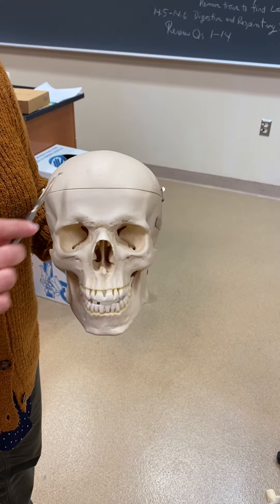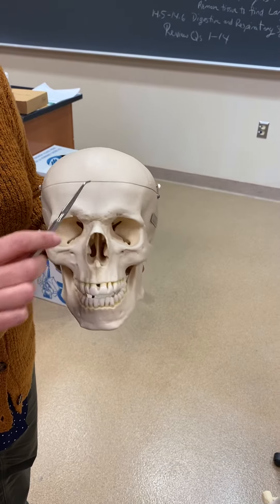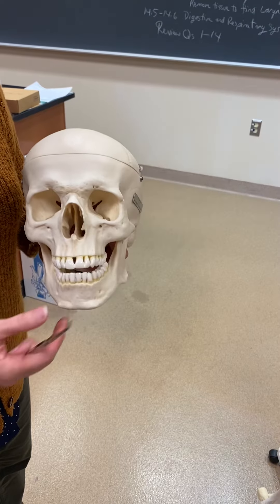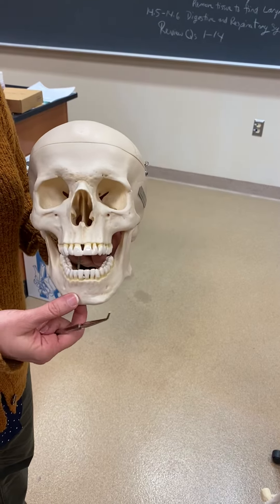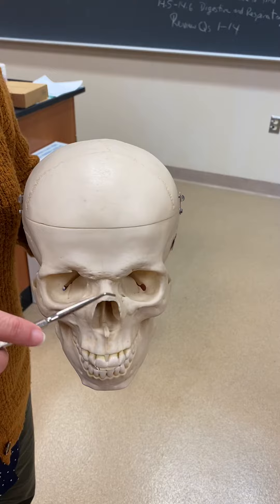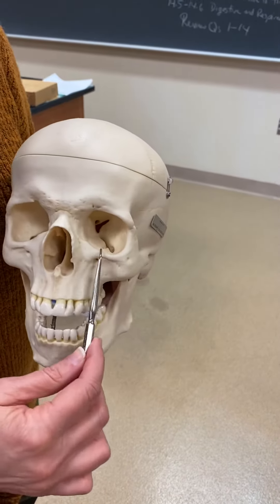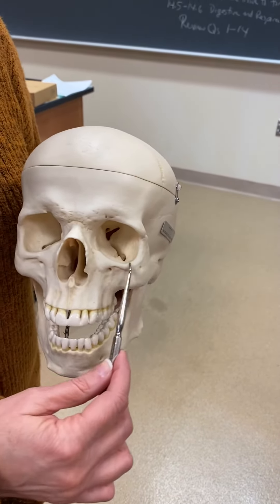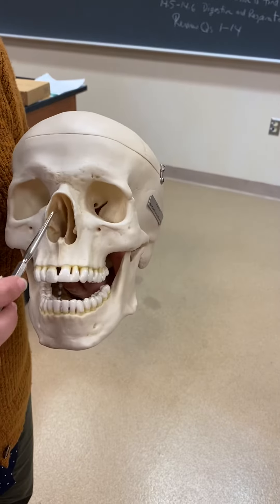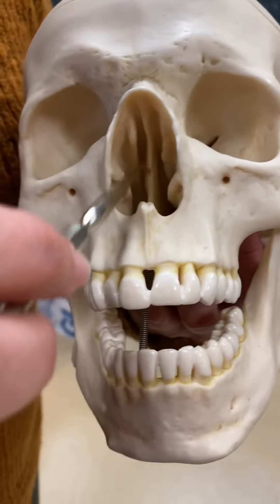The bones of the skull. This is the frontal bone, this is the maxilla, the mandible, the nasal bones, the zygomatic bones are the cheekbones, and the vomer bone is the bone in the middle.